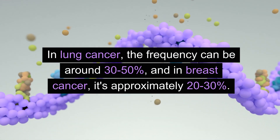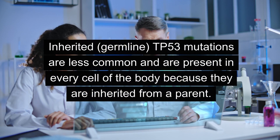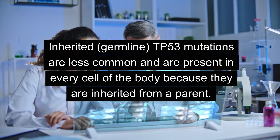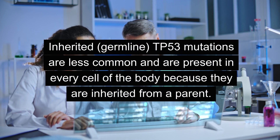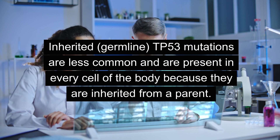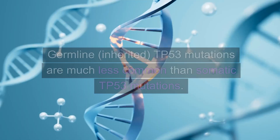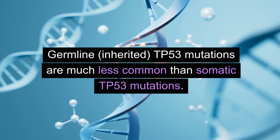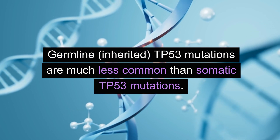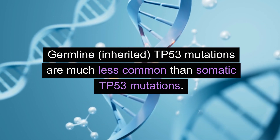Inherited germline TP53 mutations are less common and are present in every cell of the body because they are inherited from a parent. They can be passed on to offspring. Germline inherited TP53 mutations are much less common than somatic TP53 mutations.